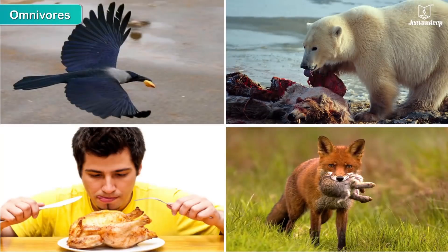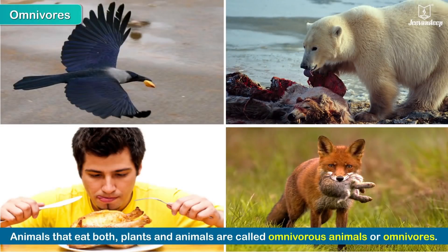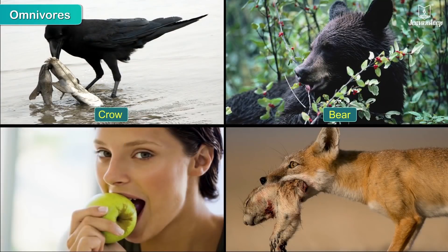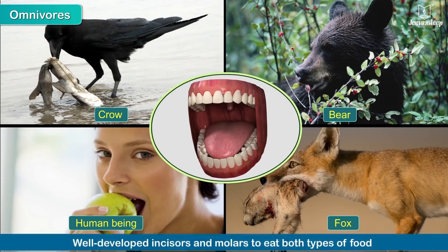Animals that eat both plants and animals are called omnivorous animals or omnivores. Crows, bears, human beings and foxes are some omnivores. Omnivores have well developed incisors and molars to eat both types of food.